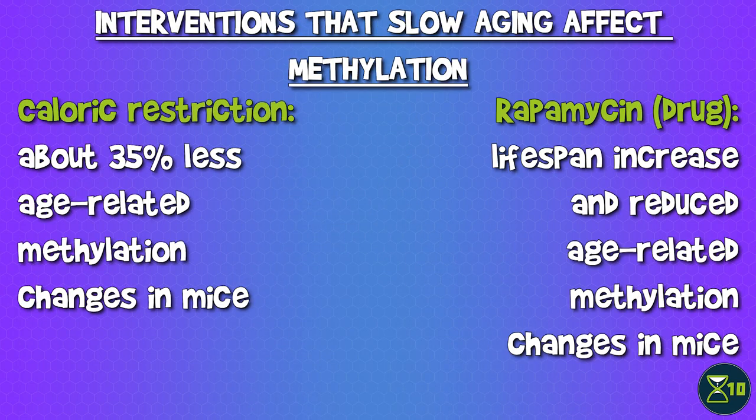It's also worth mentioning that interventions that slow aging also affect methylation. For example, caloric restriction is a very reliable way of extending lifespan, and it prevented about 35% of age-related methylation changes in mice.